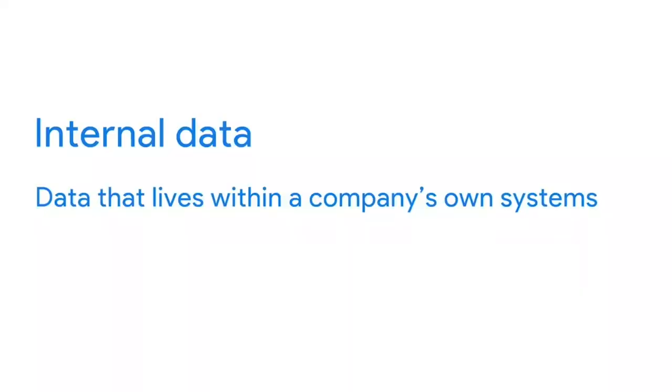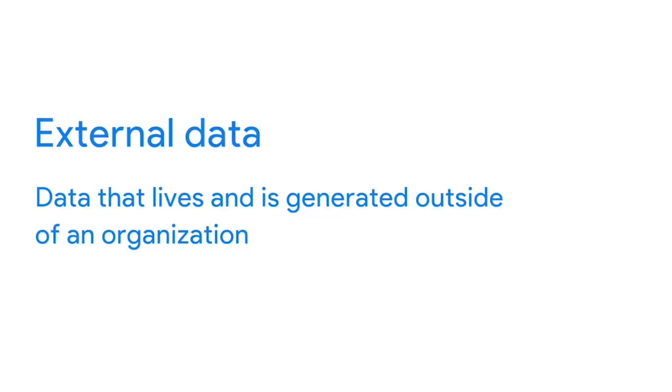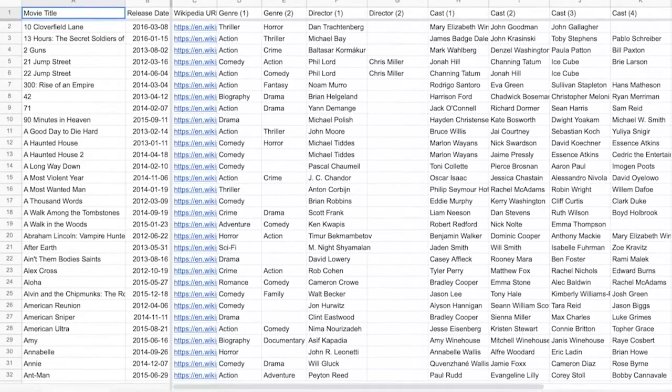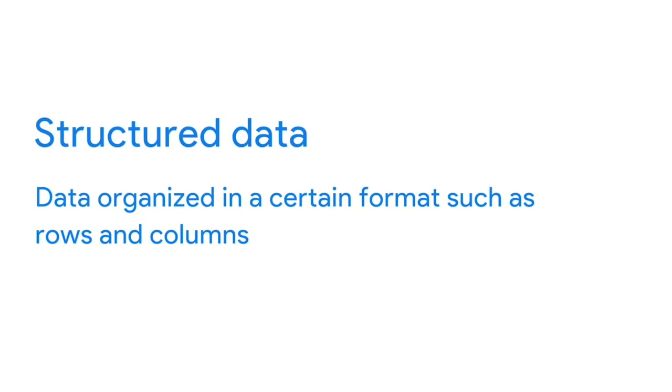Now let's talk about internal data, which is data that lives within a company's own systems. For example, if a movie studio had compiled all of the data in the spreadsheet using only their own collection methods, then it would be their internal data. The great thing about internal data is that it's usually more reliable and easier to collect. But in this spreadsheet, it's more likely that the movie studio had to use external data — data that lives and is generated outside of an organization. External data becomes particularly valuable when your analysis depends on as many sources as possible. A great thing about this data is that it's structured. Structured data is data that's organized in a certain format, such as rows and columns. Spreadsheets and relational databases are two examples of software that can store data in a structured way.